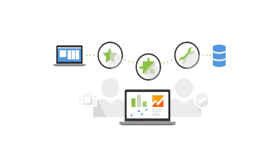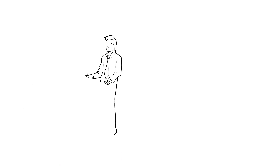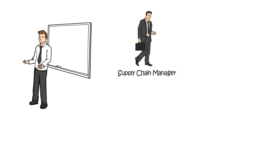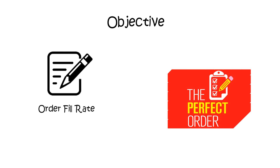Hello everyone. Welcome to the Analytics Mastery Club. In the last session we learned how a supply chain manager can solve the problem of delivery of goods using vehicle routing problem analysis. The objective of this session is to learn two important supply chain metrics: order fill rate and perfect order matrix.